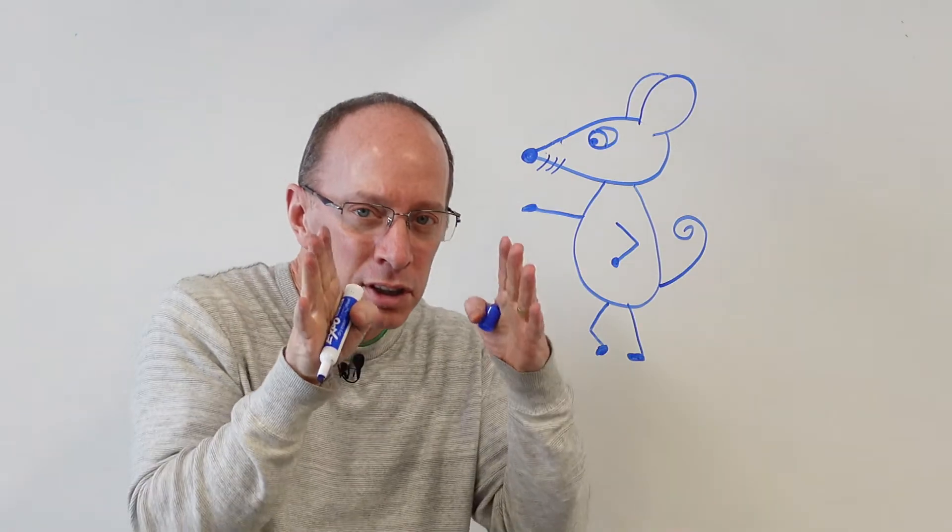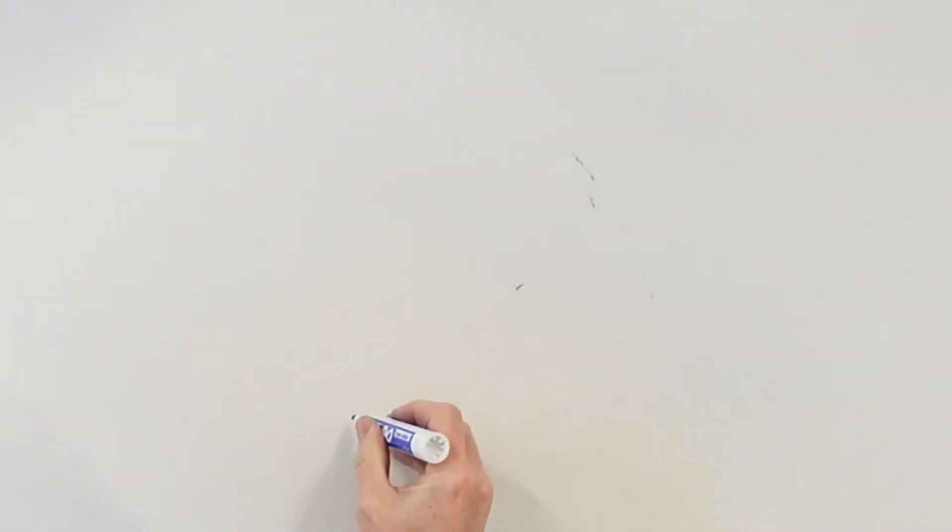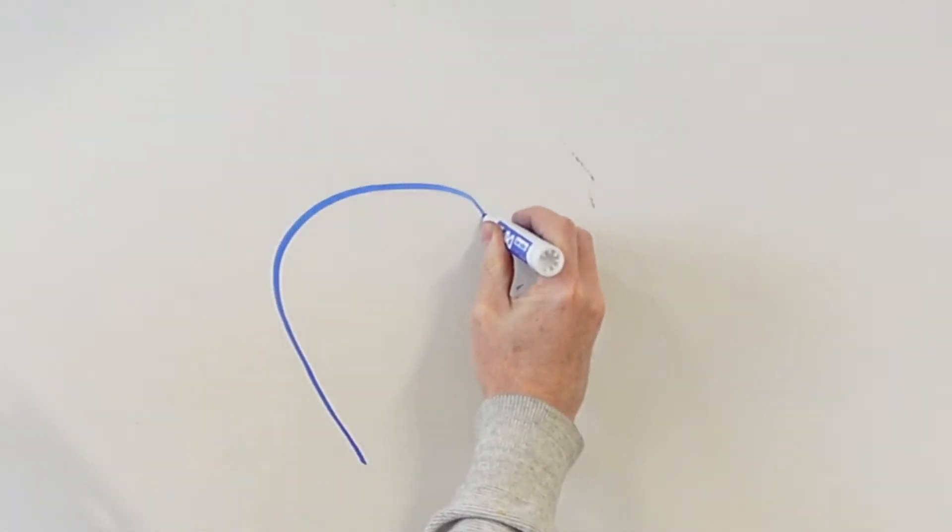Let's do another one where the mouse is looking straight forward at you. The same shape starting right here. Like a bell shape, just like this.